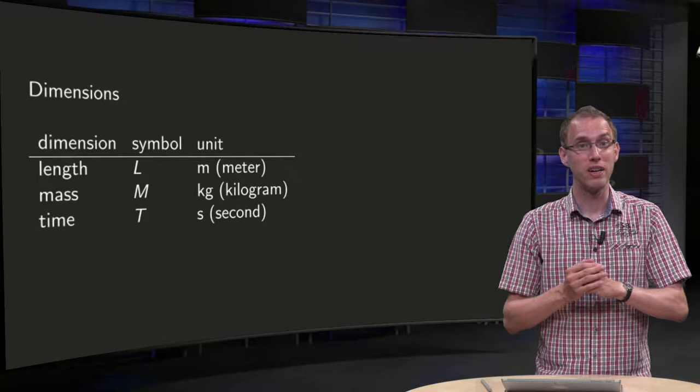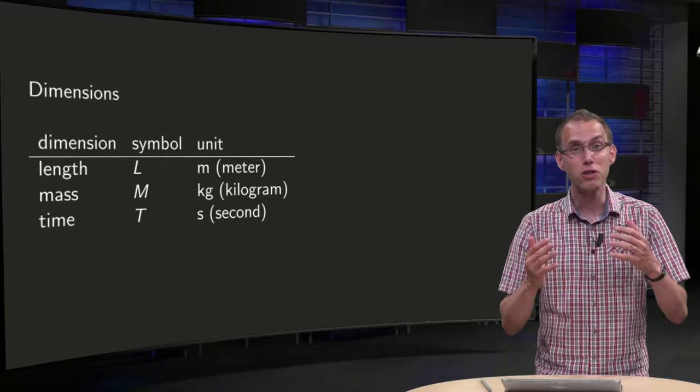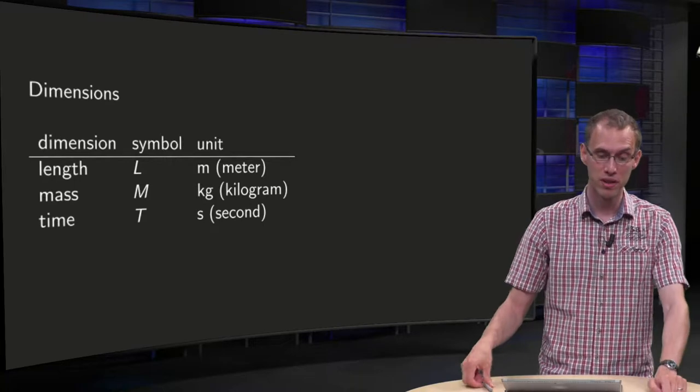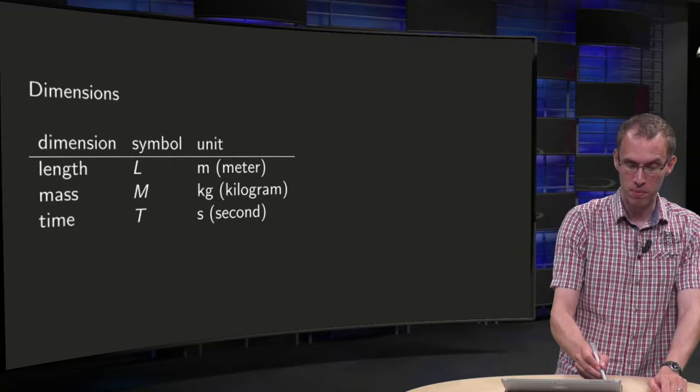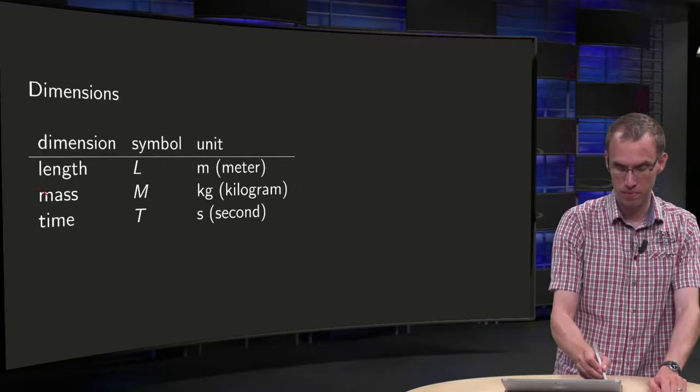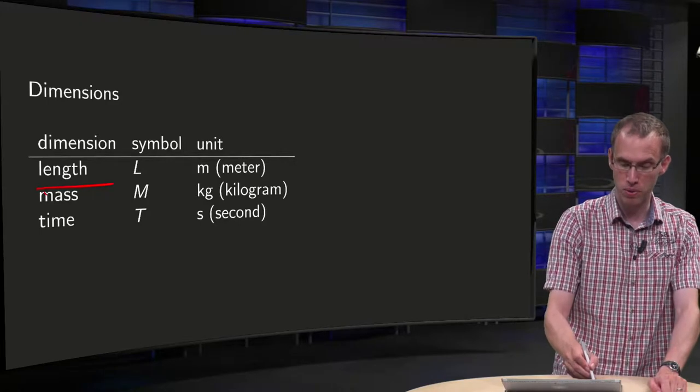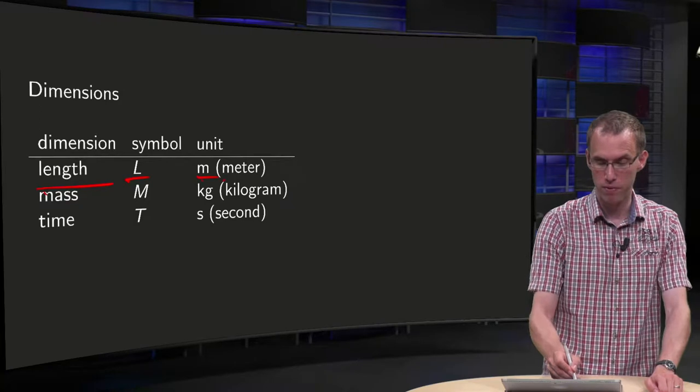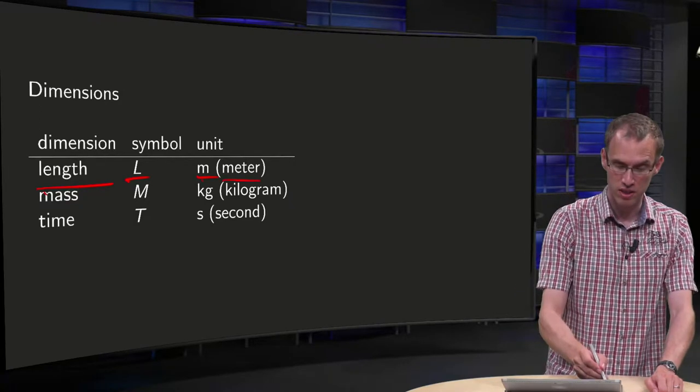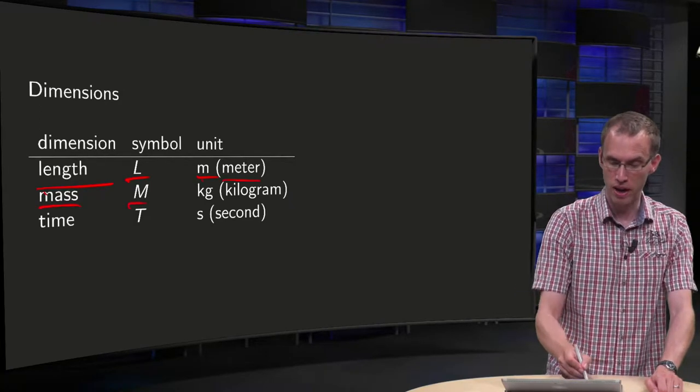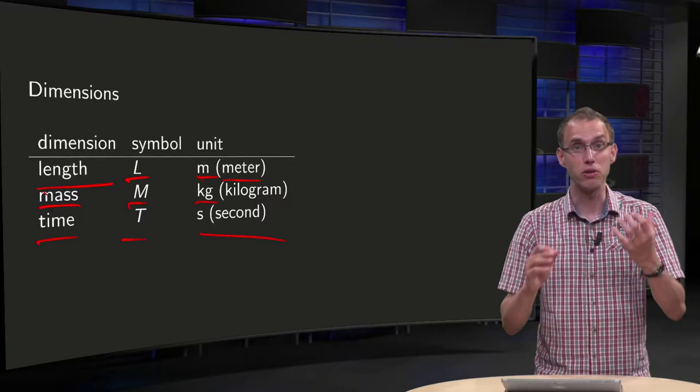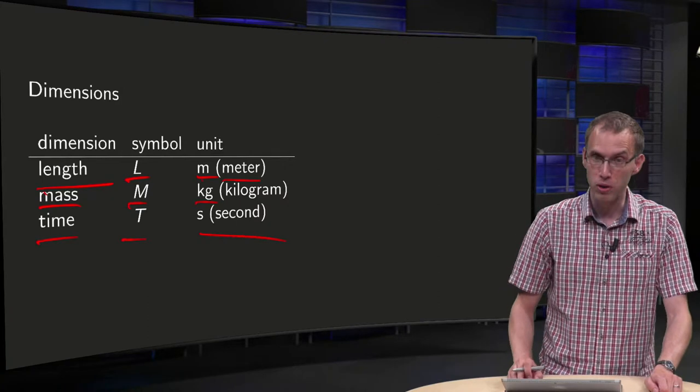So for our mechanical problems, actually for most of the cases, three basic dimensions are already enough. For example, we have the dimension of length, with a symbol L and usually as units meters. Second, mass, symbol M in kilograms and third, time, symbol T in seconds. So those are easy to remember, of course.